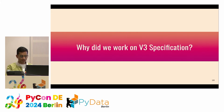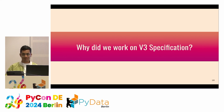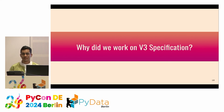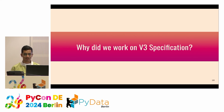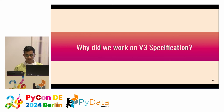Version two was working really well for us and things were going good. But the question comes: why did we start working on v3? I think the first commit goes back to 2018 or 2019, when work started on the v3 specification. There are multiple reasons why we started working on it.